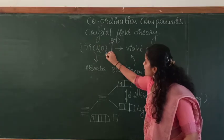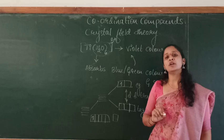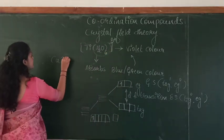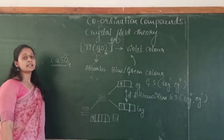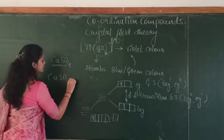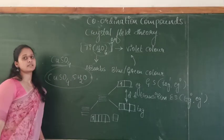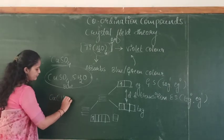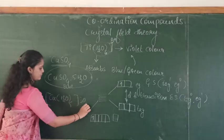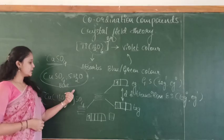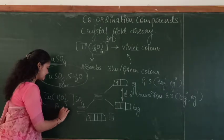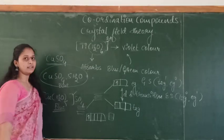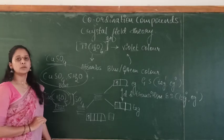The ligands attached to the central metal atom play a very important role in the formation of color. For example, anhydrous copper sulfate is white in color, that is colorless. However, pentaaqua copper(II) sulfate — [Cu(H₂O)₅]SO₄ — is blue in color, because it forms a complex and the color is affected by the ligand.